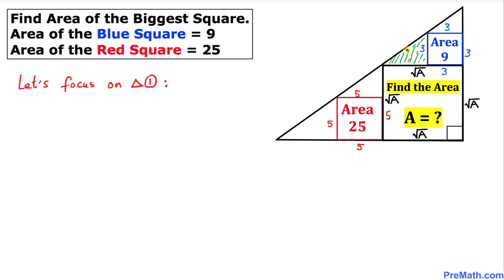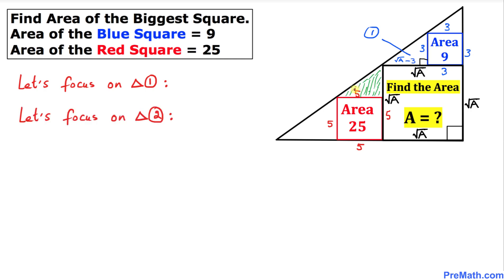In the next step, let's focus on this shaded triangle — I'm going to call this triangle number one. As we can see, this is a right triangle. One side of triangle number one is 3 units, and the horizontal part is the whole length square root of a minus 3, giving us square root of a minus 3.